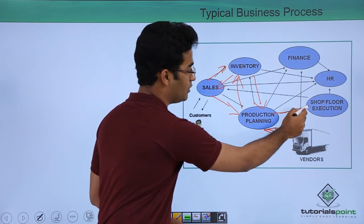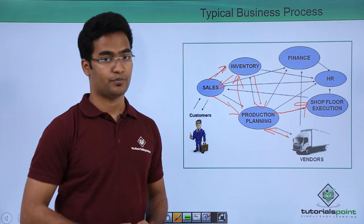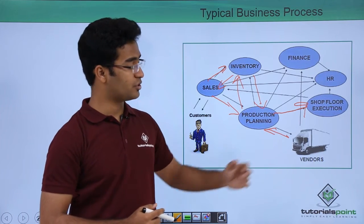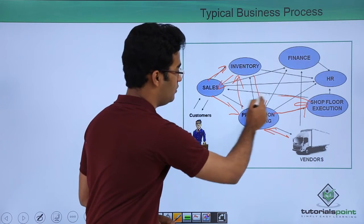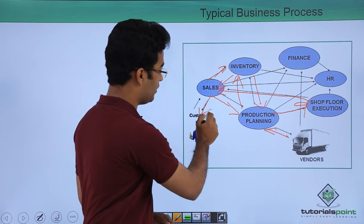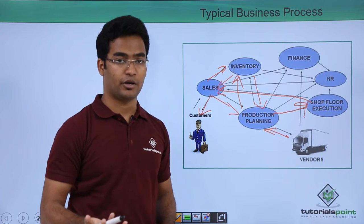It forwards the raw materials to the shop execution floor. The shop execution floor produces that material and reverts back to the sales department, and the sales department gives the customer that particular product.